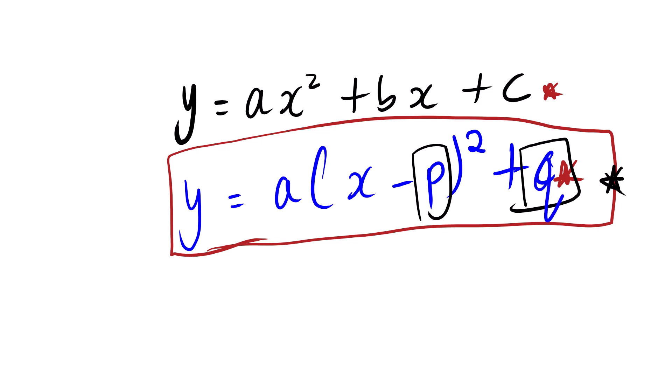Sometimes instead of C, it is Q. These two values represent the turning point. From the standard general equation without brackets, we cannot see the turning point of a parabolic graph. But with the bracket form of the equation, we can see the turning point of the parabolic graph.